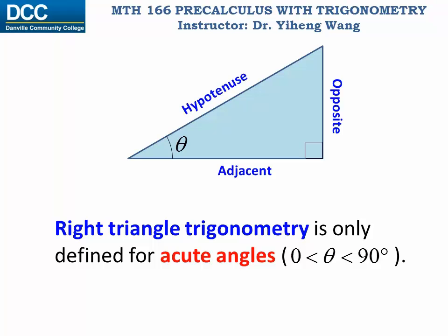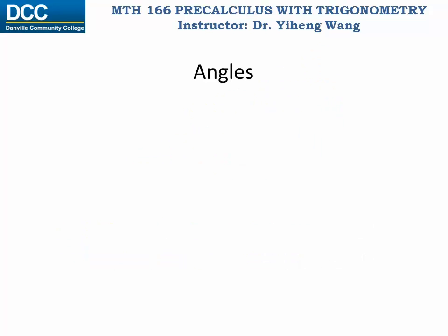In this class we define angles using the rotation of a ray. Let's draw an arbitrary ray, which is a half line with an endpoint, and then we rotate this ray about its own endpoint. The measurement of how much it has rotated is defined to be an angle.